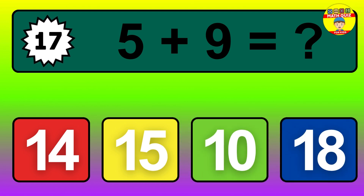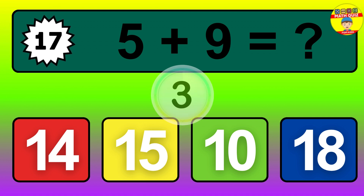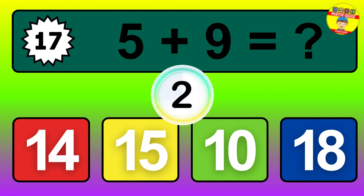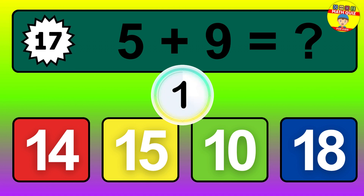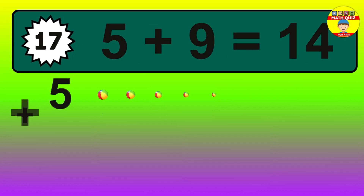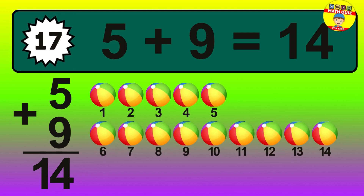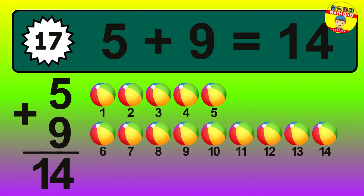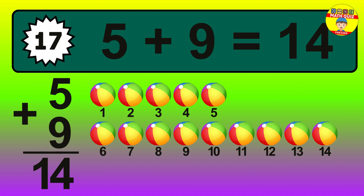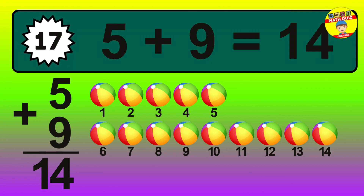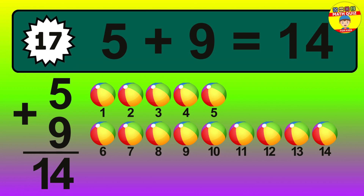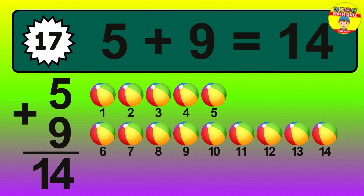Question 17. 5 plus 9 equals what? So the answer is 5 plus 9 is 14. Let's count it. 1, 2, 3, 4, 5, 6, 7, 8, 9, 10, 11, 12, 13, 14.